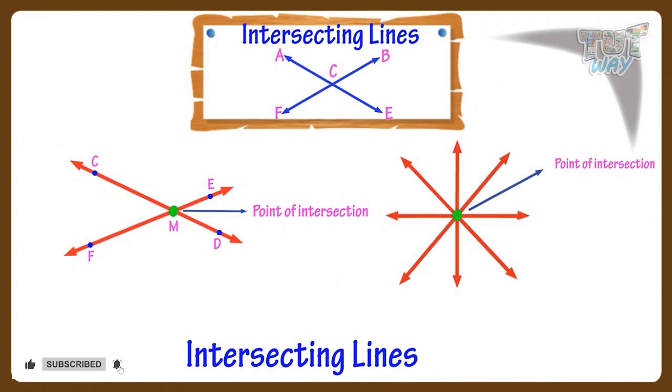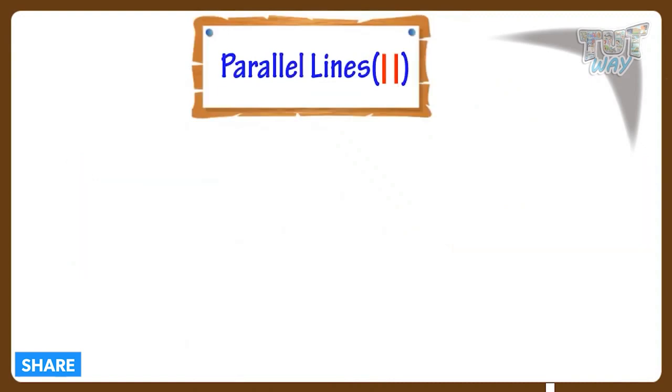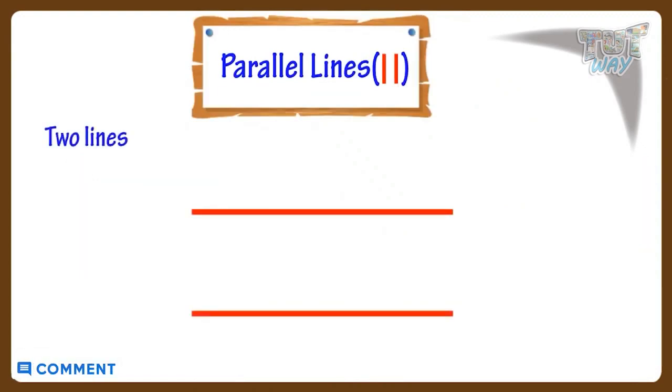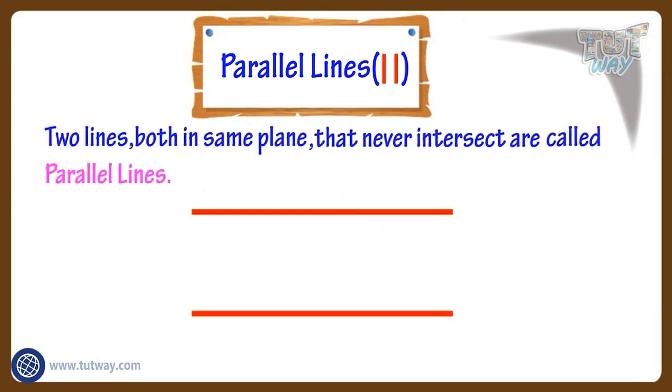Here the two lines CD and EF are intersecting at point M. Now let's see what are parallel lines.